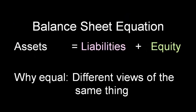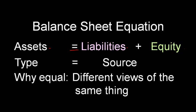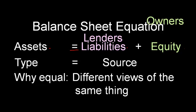This leads us to the basis of double-entry accounting, which is the balance sheet equation: assets equal liabilities plus equity. Why are they equal? They're equal because they're different views of the same thing — like saying what someone is and where they came from. For example, I am a male and I come from Illinois; it's two different views of the same thing. Assets are the things by type, and liabilities and equity are the source of those assets. Assets supplied by lenders are called liabilities, and assets supplied by owners is called equity.